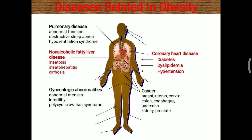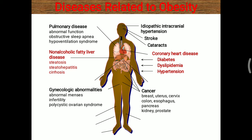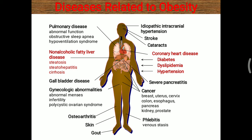Cancers of the breast, uterus, cervix, colon, esophagus, pancreas, kidney, and prostate are commonly observed with obesity. Idiopathic intracranial hypertension, stroke, and cataract are also observed. Severe pancreatitis and gallbladder disease are seen, and sometimes osteoarthritis, phlebitis, and gout are also observed. All these diseases have shown a correlation with obesity.